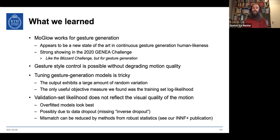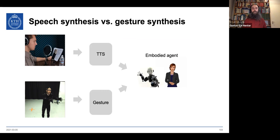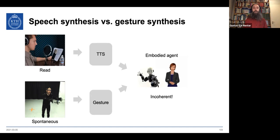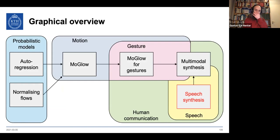We can reduce the mismatch between training and validation likelihood using methods from robust statistics applied to the flows, which we published at the ICML INF workshop. Now, thinking about where gesture and speech fit into human communication together: for an embodied agent that both speaks and gestures, we need to synthesize both. Normally speech and gesture come from different actors — someone reading sentences doesn't gesture much — leading to incoherent behavior. We want to record speech and motion together and generate them jointly.